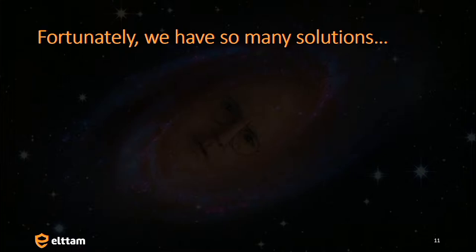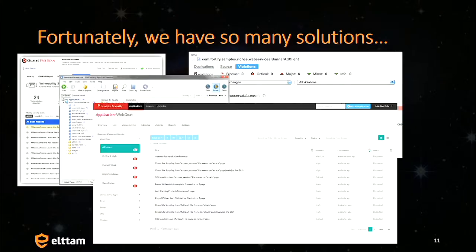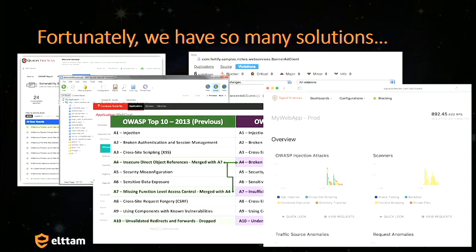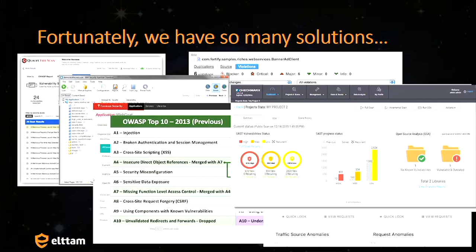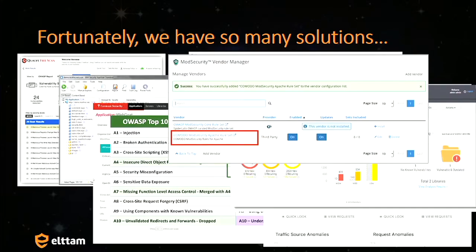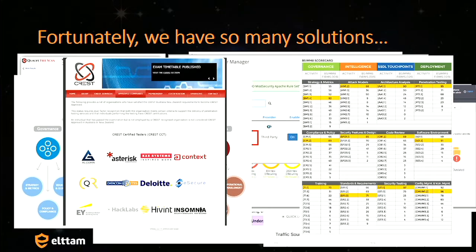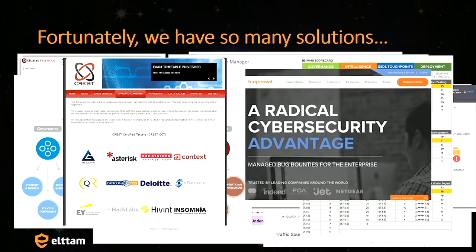Already at this conference — this is my first OWASP ever talking — I've seen so many acronyms and I don't recognize half of them. If you think about all the different types of solutions: different types of web scanners, application firewalls like Signal Sciences, Checkmarx for static analysis, maturity frameworks, scorecards, certified penetration testing, and things like bug bounties.